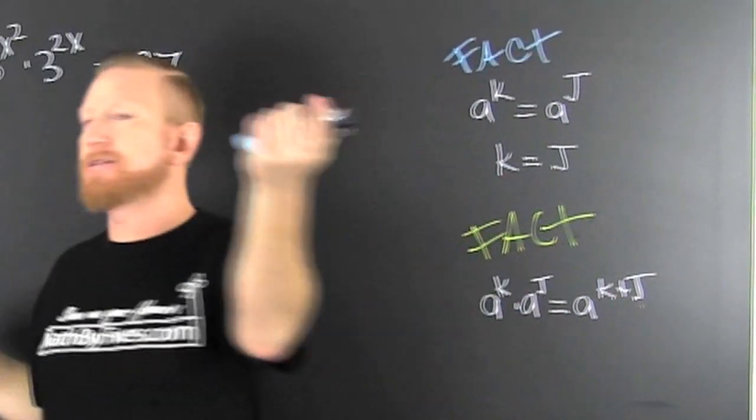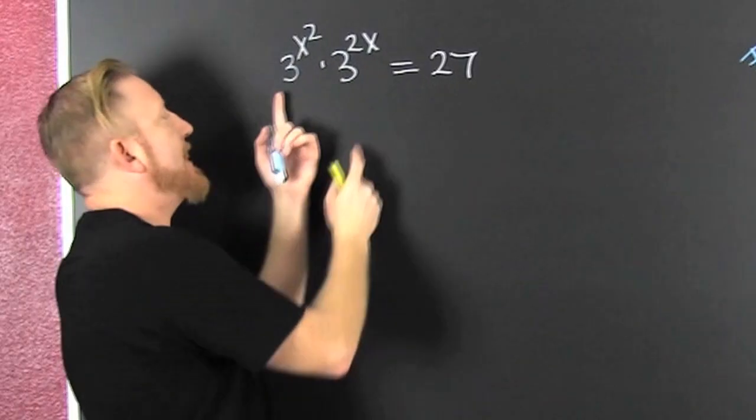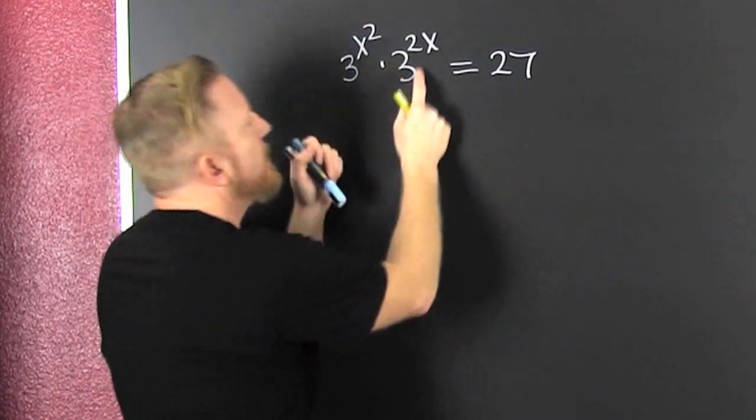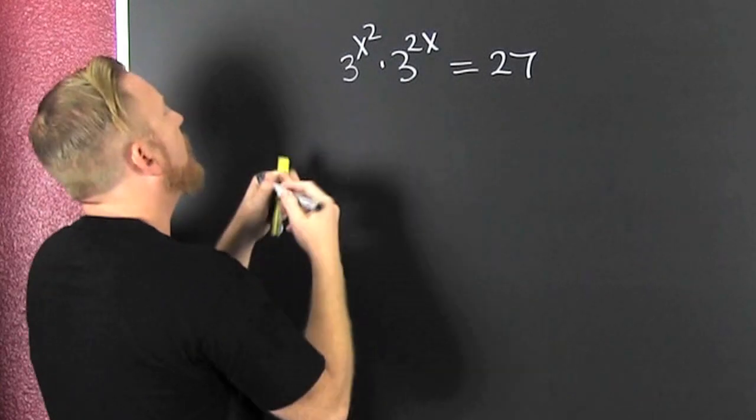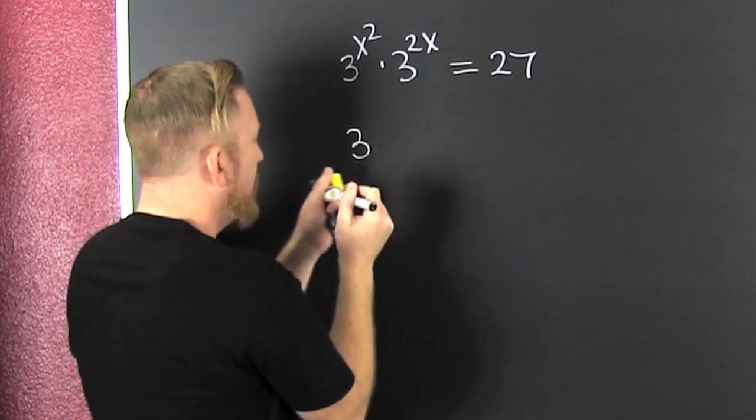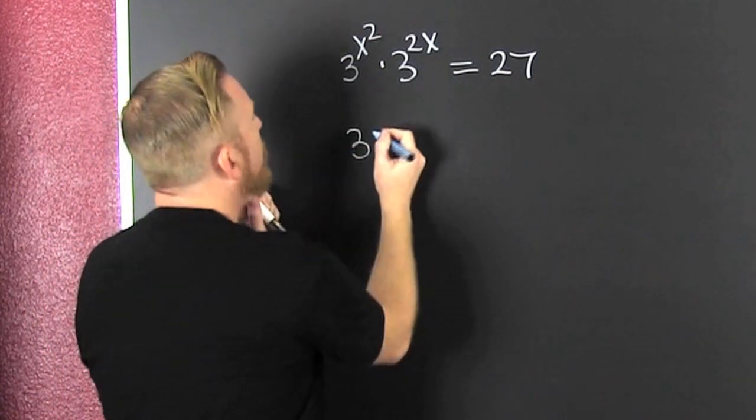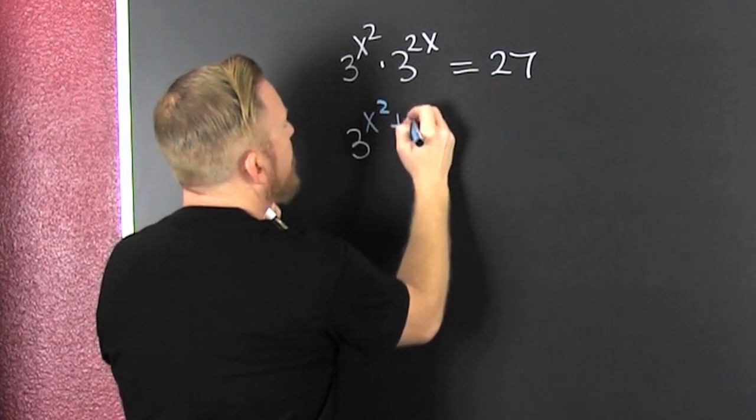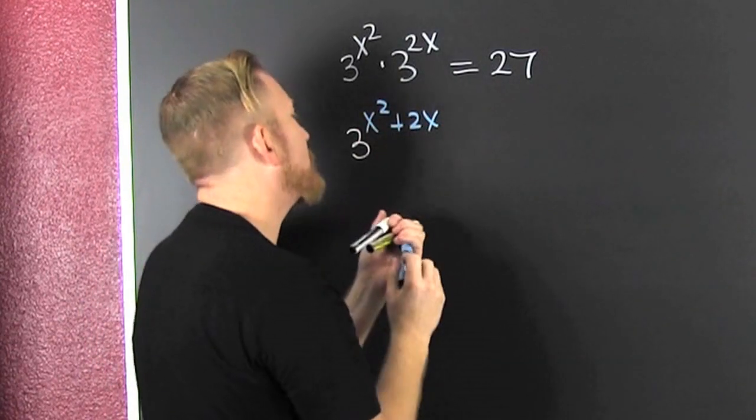What's next? Let's go. Let's handle that. I have 3 to the x squared times 3 to the 2x. That's 3 to the x squared plus 2x. What's next?